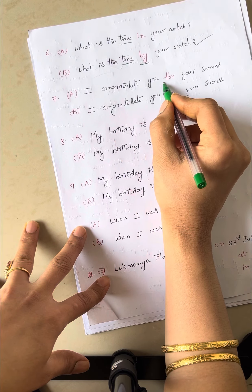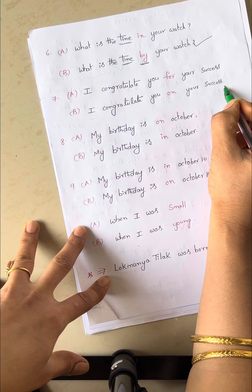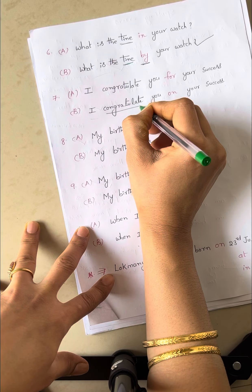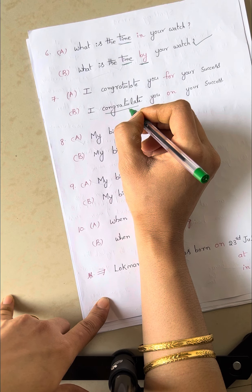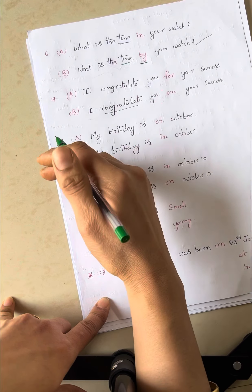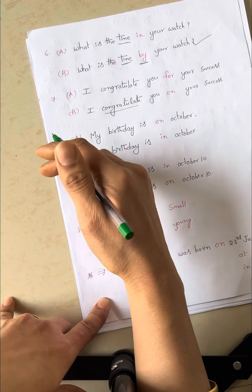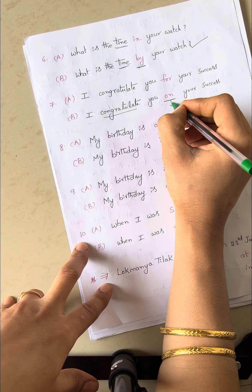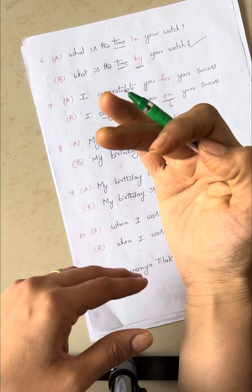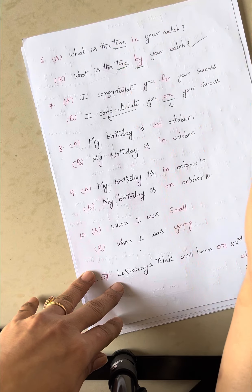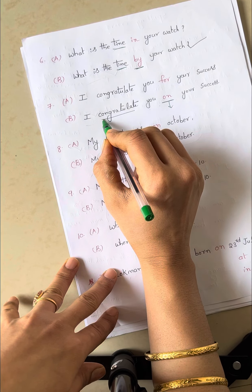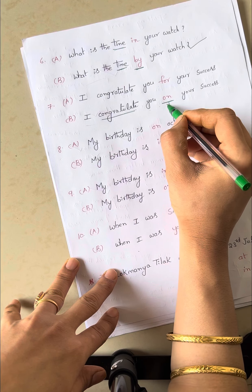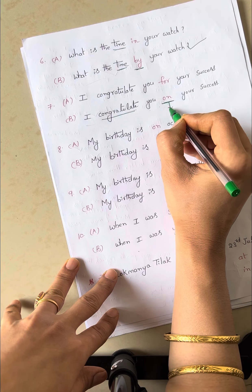I congratulate you for your success. I congratulate you on your success. Congratulation indicates praising or congratulating someone for their achievement. At that time, we can use the preposition on. On indicates one type of occasion. Whenever congratulate comes in a sentence, you can use on preposition.